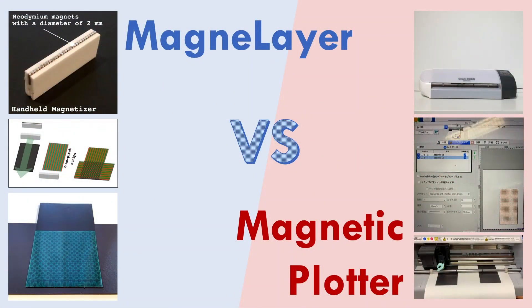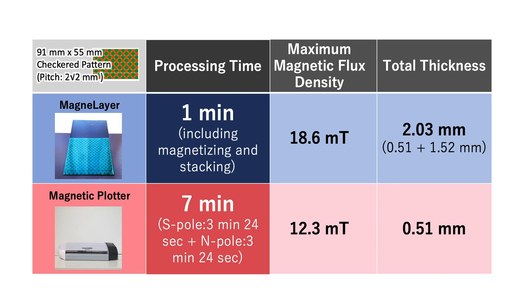Then, we compare this magnetic layering method with the magnetic plotter method. We prepared the same pitch checkered pattern magnetic sheets using both methods and compared them. As a result, the biggest difference between the two methods is their speed. The plotting machine is accurate and automatic, but it takes 7 times longer to magnetize. For MagneLayer, speed is a great advantage as a rapid prototyping method.